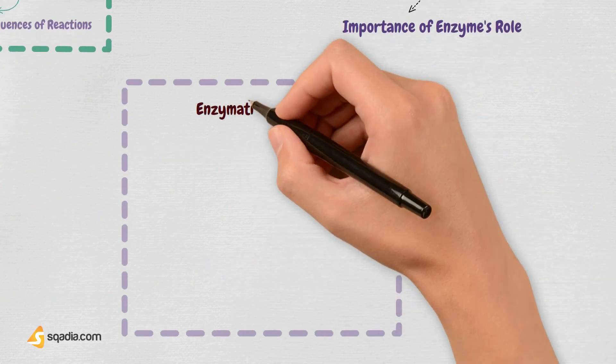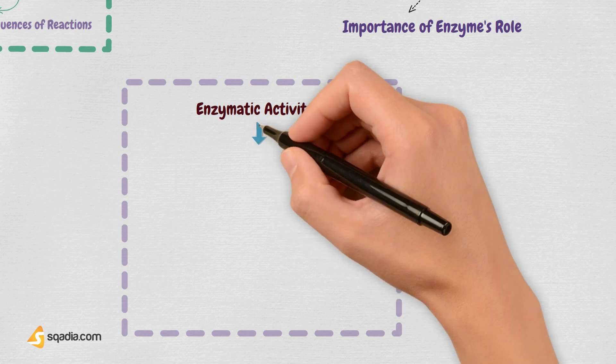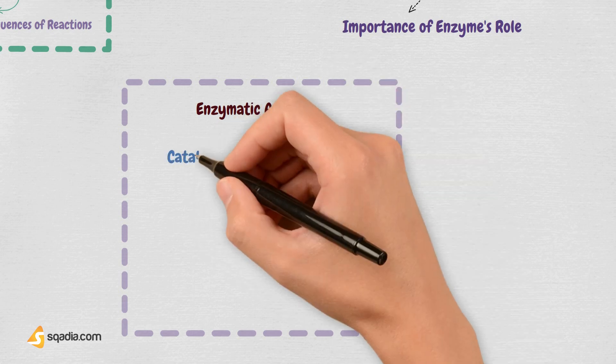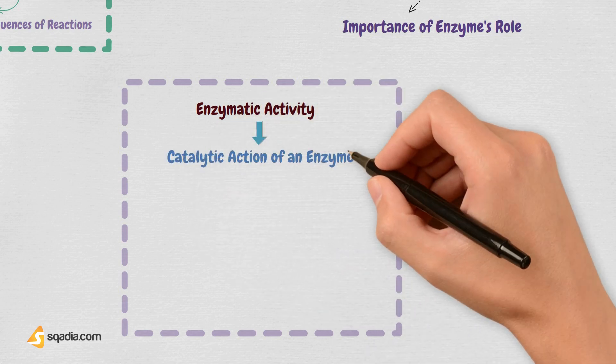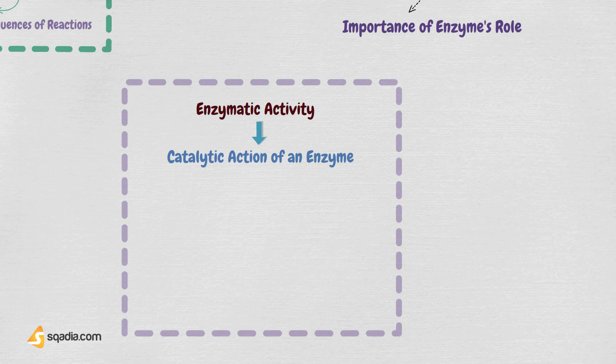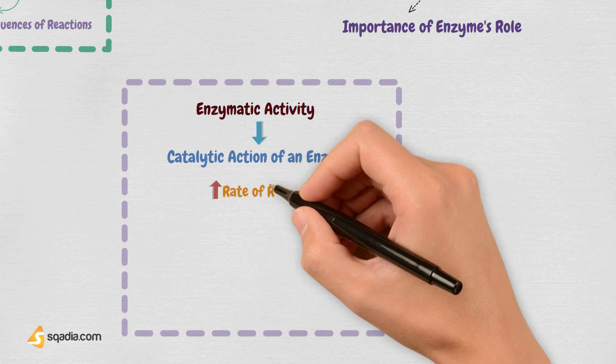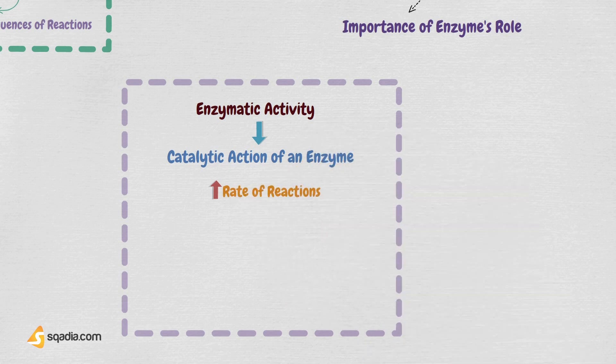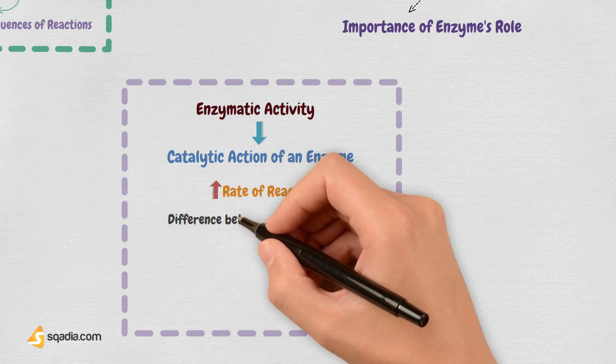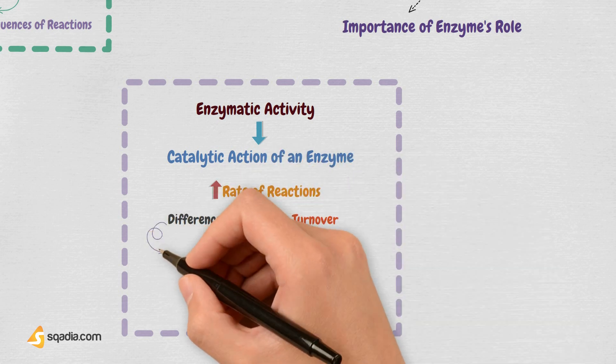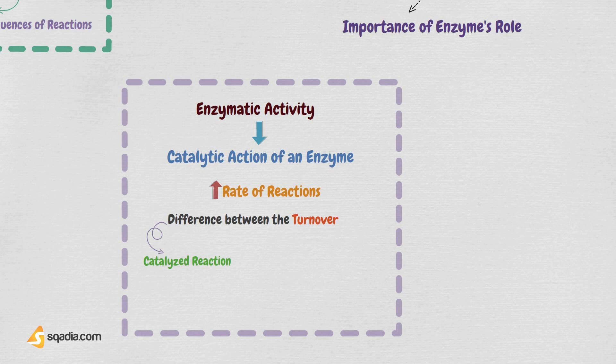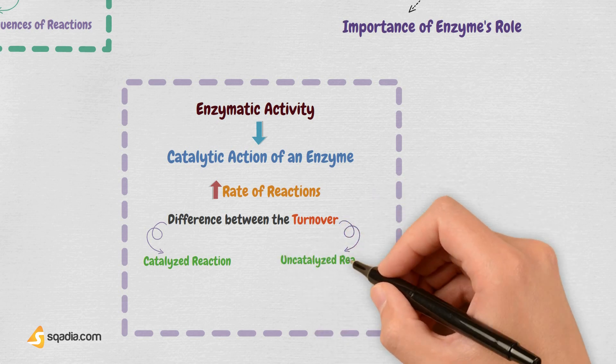Talking about enzymatic activity, which is the catalytic action of an enzyme, basically referring to its activity, is measured by determining the increase in the reaction rate under precisely defined conditions. In simpler terms, this is the difference between the turnover of the catalyzed reaction and uncatalyzed reaction in a specific time.